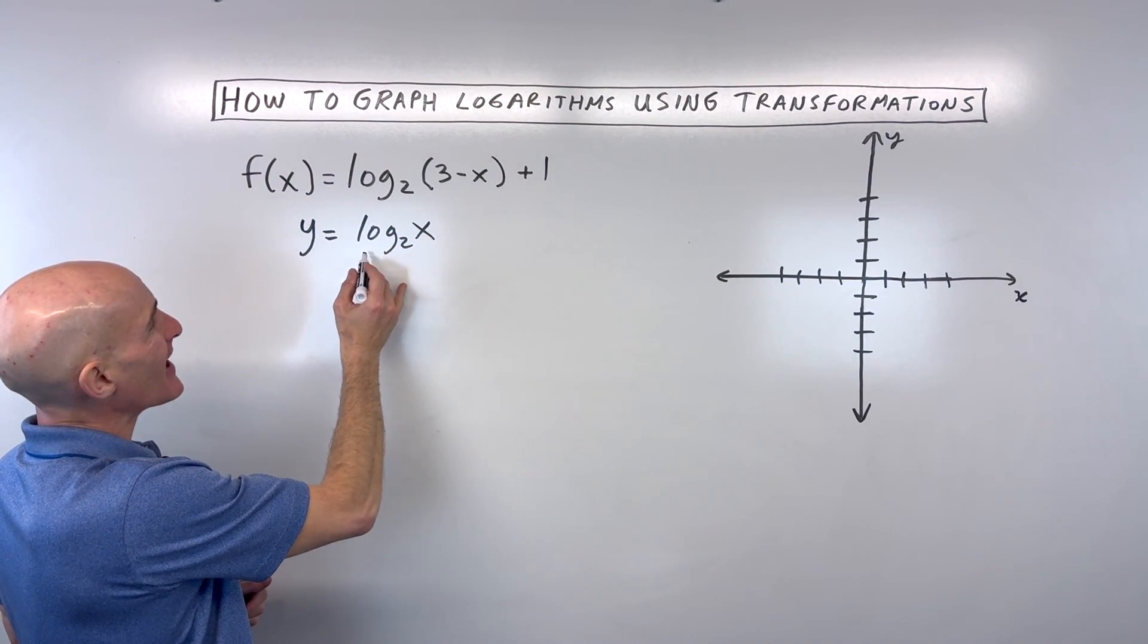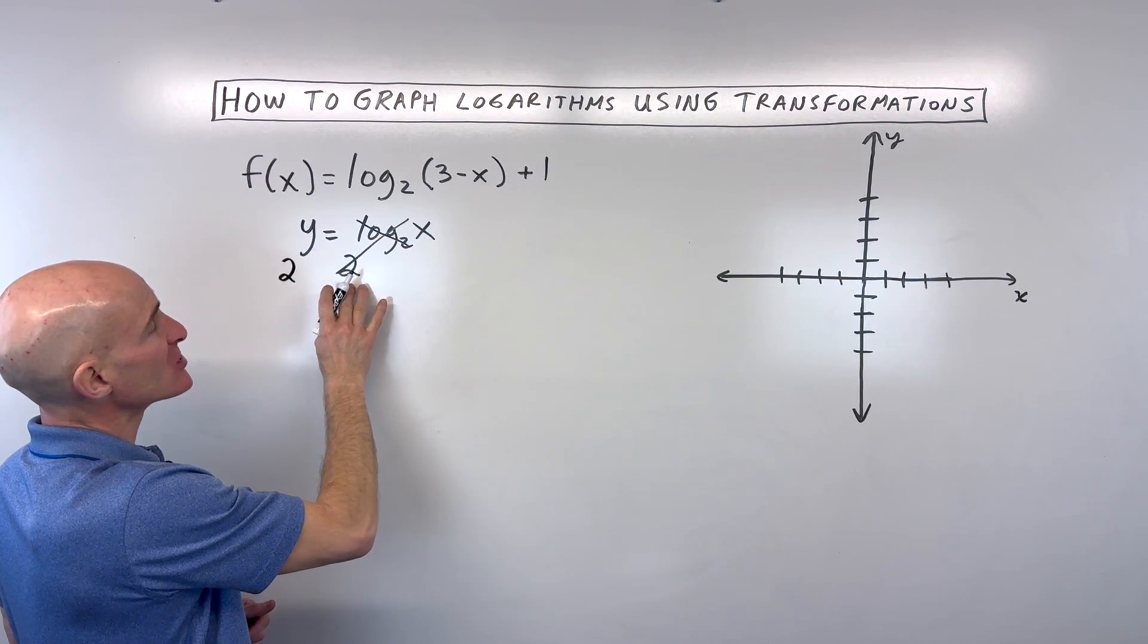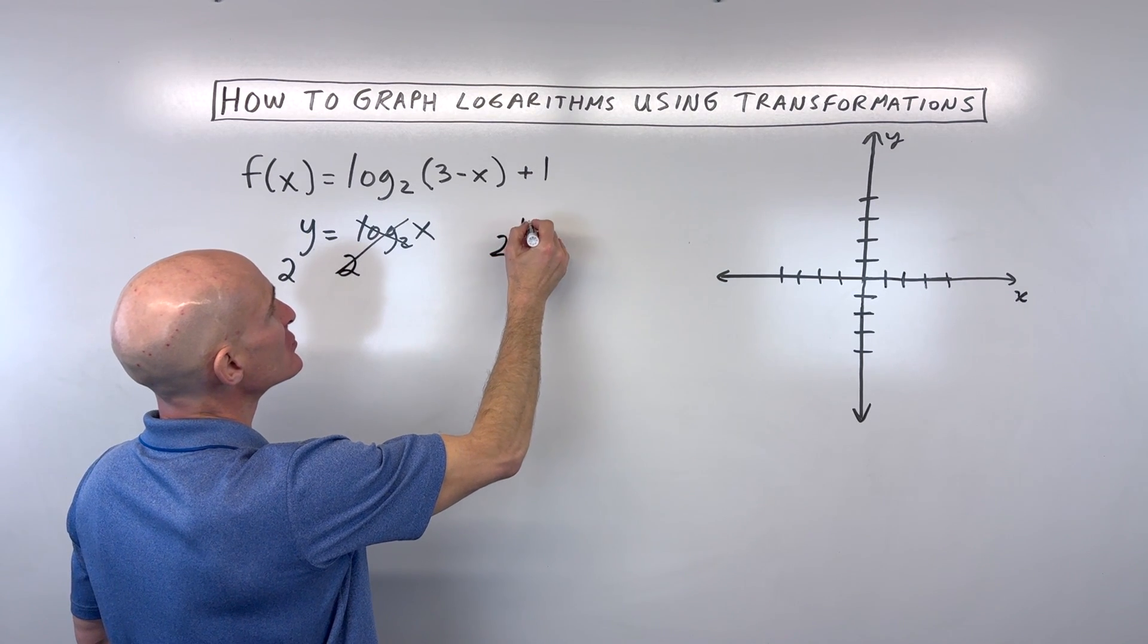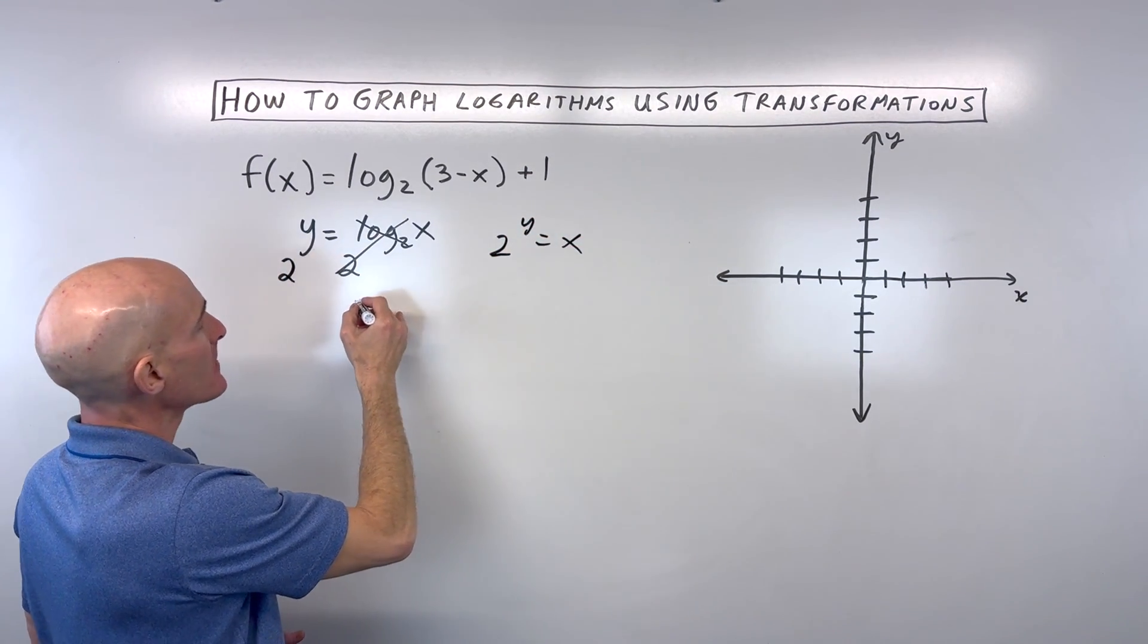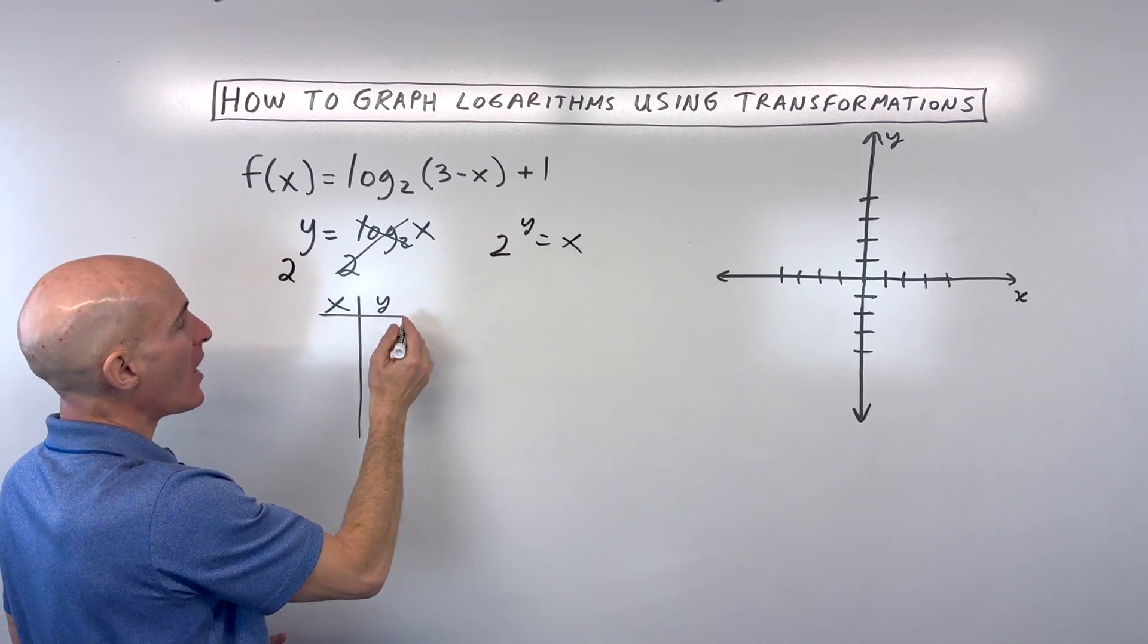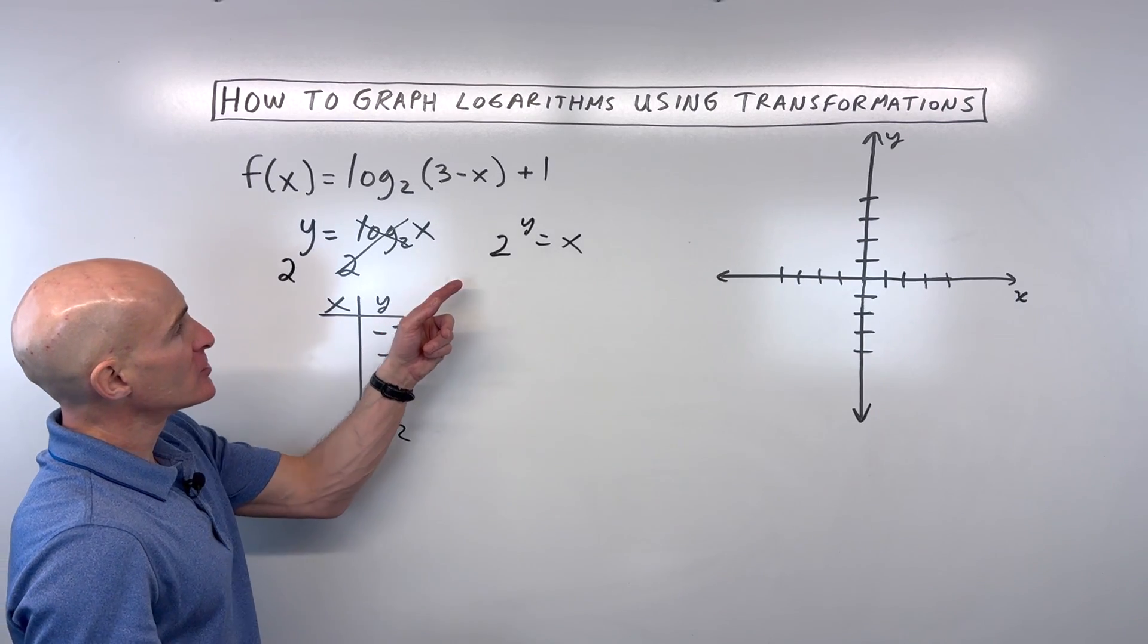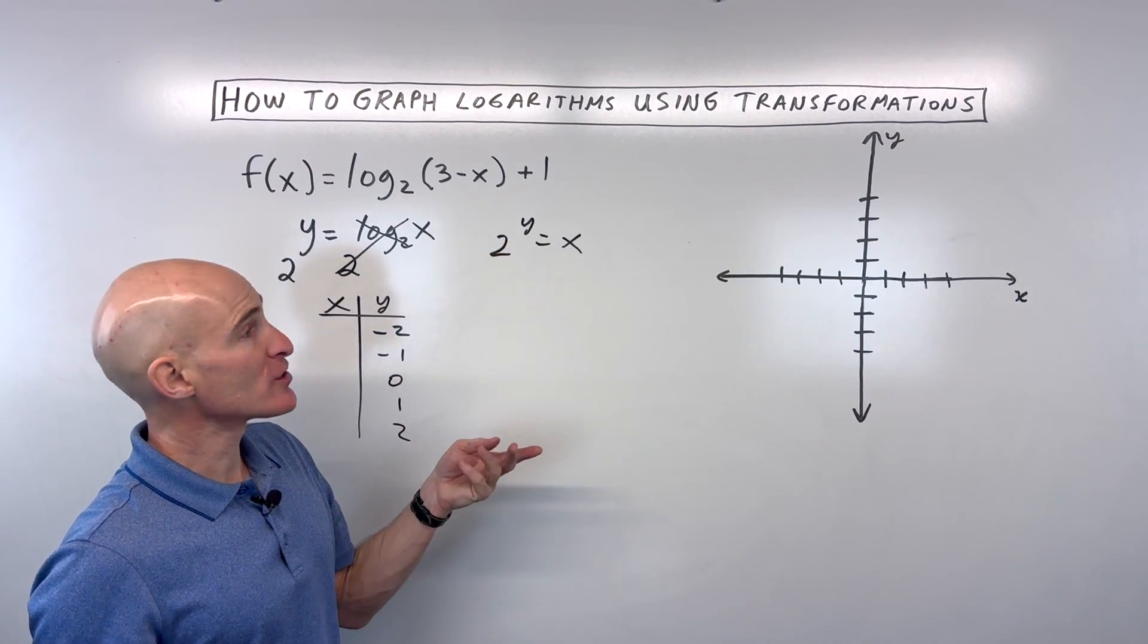Now you can rewrite this in exponential form by exponentiating or raising both sides using base 2 and so what we have here is 2 to the y power is equal to x. So let's go ahead and make a table and let's put some values in for y since that's in the exponent position and we'll solve for x. So 2 to the negative 2, well 2 squared is 4.